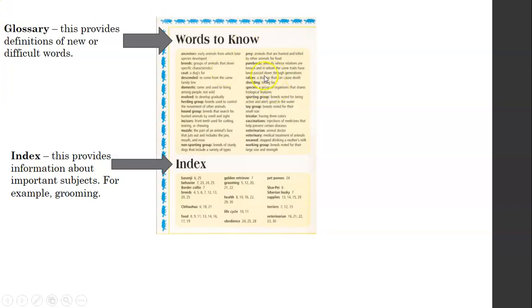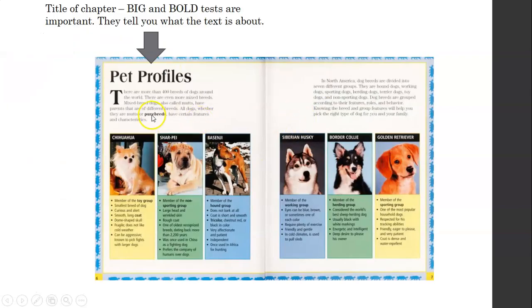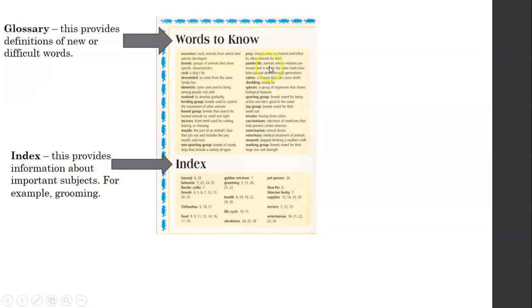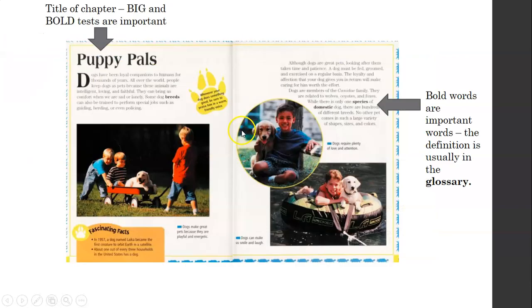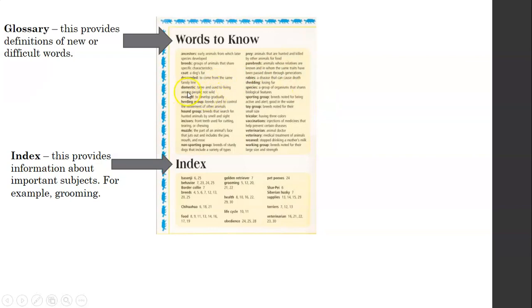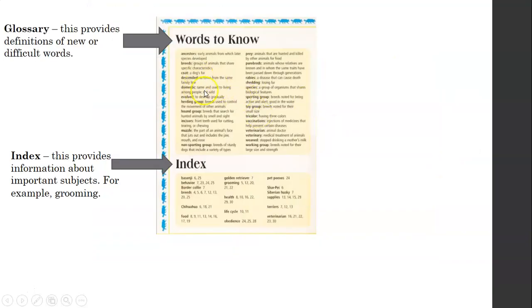Well, this glossary has, there's that word we just saw, purebreds. Look. Purebreds is here. And then look in the glossary. Purebreds. Animals whose relatives are known, and in whom the same traits have been passed down through generations. So, that word, if I didn't know what it meant, I could just look in the glossary and figure it out. Well, let's see another one. Breeds. Let's look up domestic. Domestic. Here we go. We got domestic right here. See it? Domestic. Let's see what it means. Domestic. Tame and used to living among people, not wild. I think my daughter needs to work on being domestic because she's been so wild lately. My kids have broken three cups since I've been home. Can you believe that?